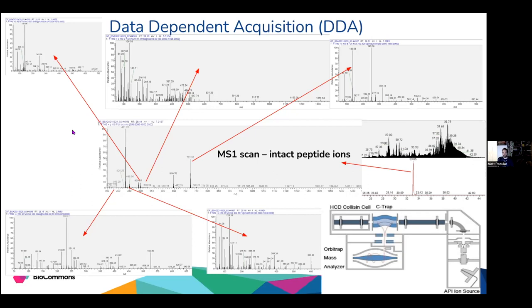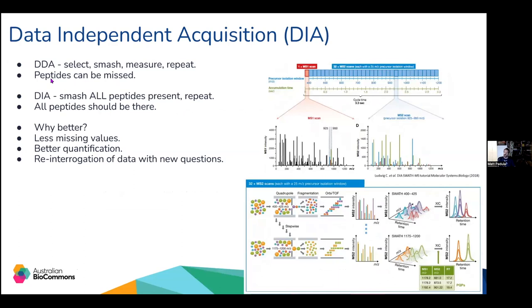This is data-dependent acquisition (DDA). The data you get depends on what is in the intact scan — the instrument takes one precursor, fragments it, moves to the next, and so on, typically doing the top 12 before returning to another MS1 scan. A problem with DDA is that peptides can be missed through stochastic selection — if you inject the same sample repeatedly, you won't always get the same answer because the mass spectrometer may be doing something else at a particular microsecond, leading to missing data.